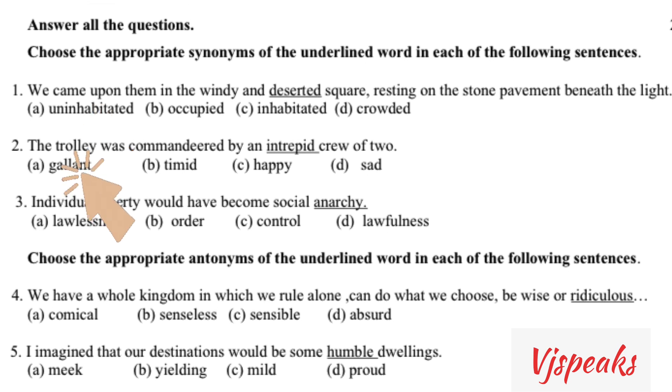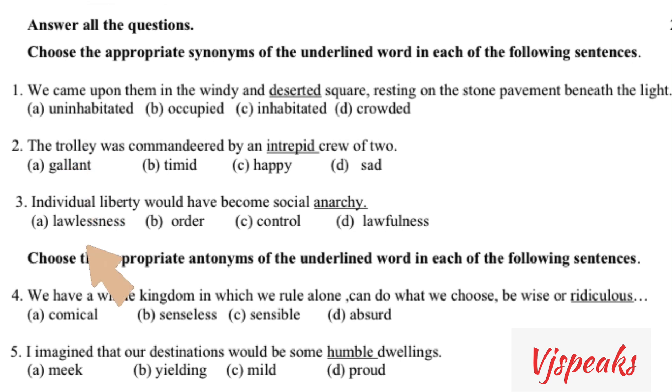Second question: 'The trolley was commanded by an intrepid crew.' Intrepid means 'gallant' — in the book, bold and daring. Page number 70.